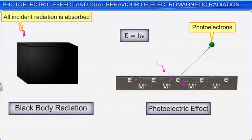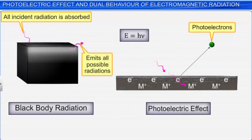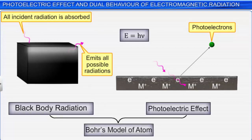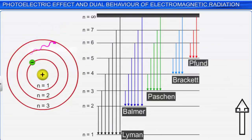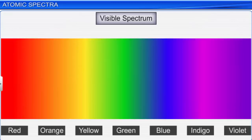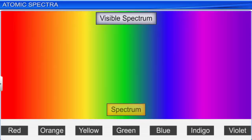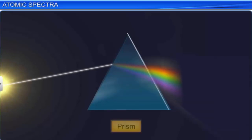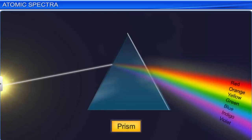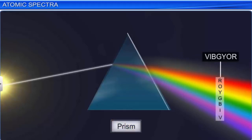These theories and conclusions — such as black body radiation and the photoelectric effect — led to the development of Bohr's model of the atom. Bohr's model could successfully explain the line spectrum of the hydrogen atom. Before we learn about atomic spectra, let us understand the term spectrum. When a ray of white light from the sun or an incandescent lamp is passed through a prism, it is dispersed into a continuous array of seven colors — namely, VIBGYOR. This is called a spectrum.